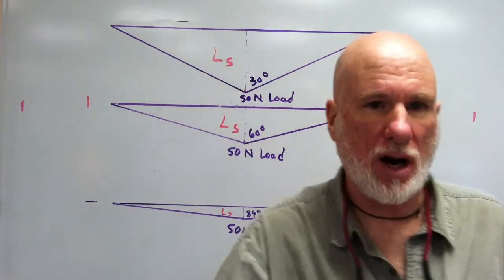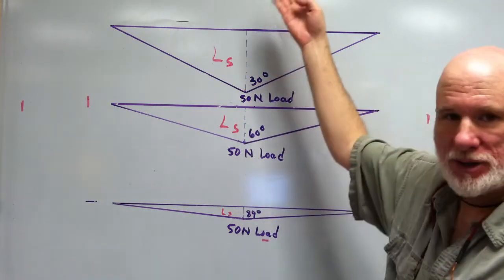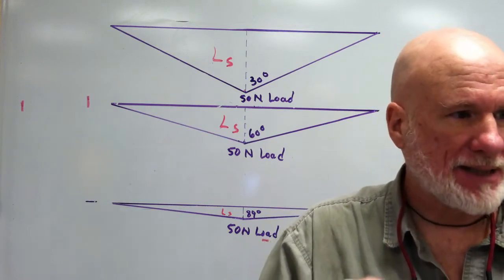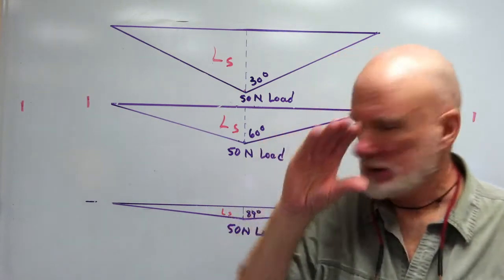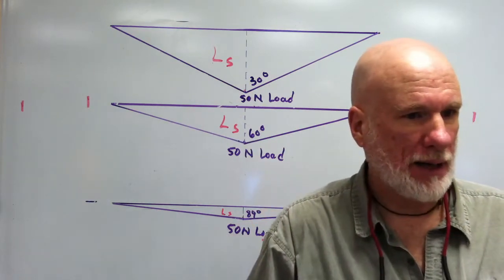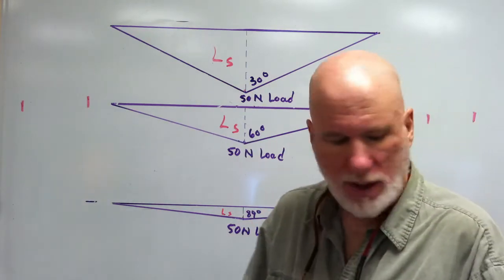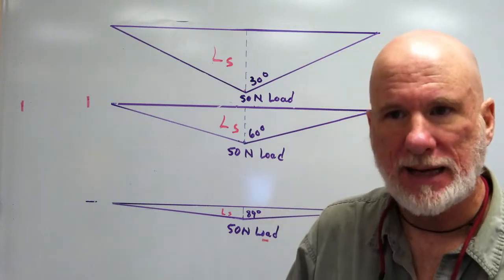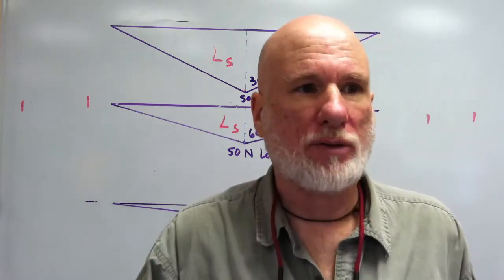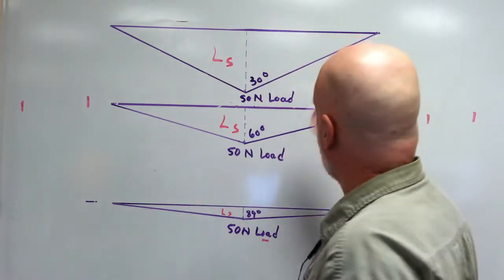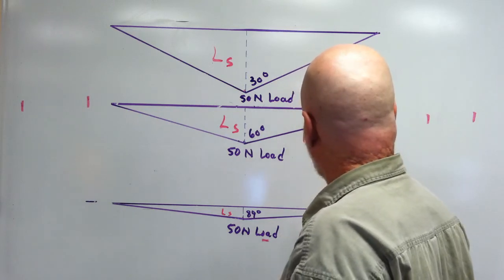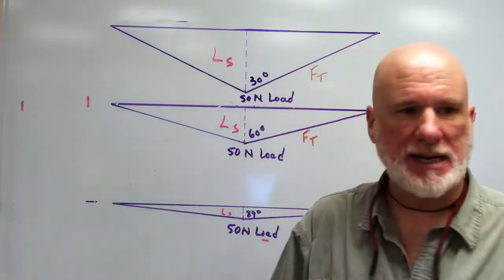As L SAG becomes larger, the angle becomes smaller. As L SAG becomes shorter, the angle becomes larger. And what we want to know is what effect that is going to have on the tension — we'll call it Force T.